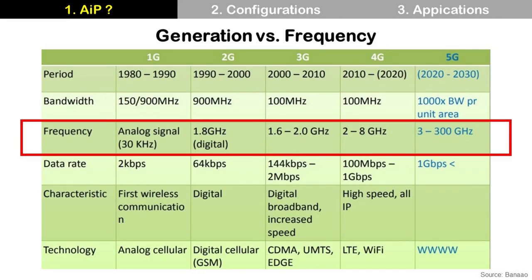Before that, let's check the operation frequencies of each generation of mobile communication. As you can see in this table, 4G uses 2 to 8 GHz frequency, and 5G uses 3 to 300 GHz, which is much higher than 4G.